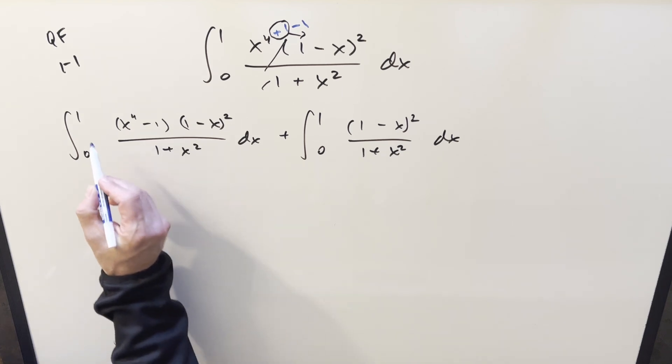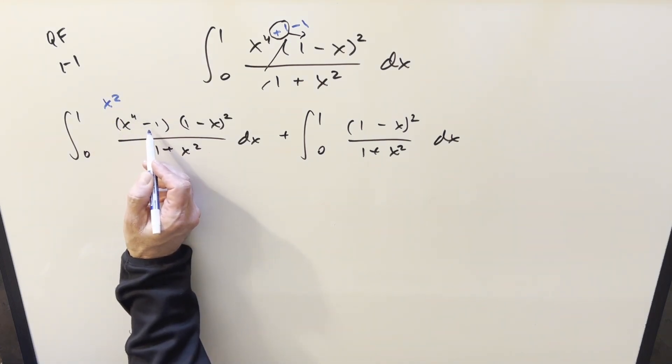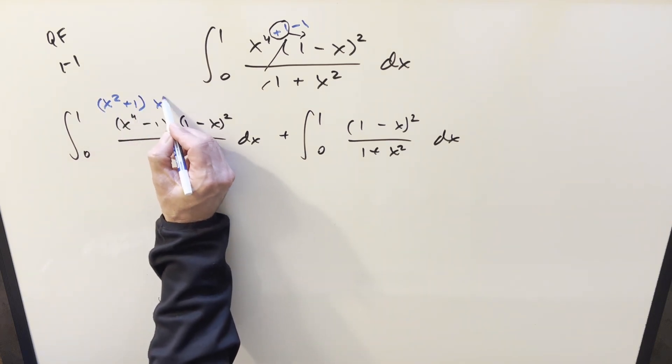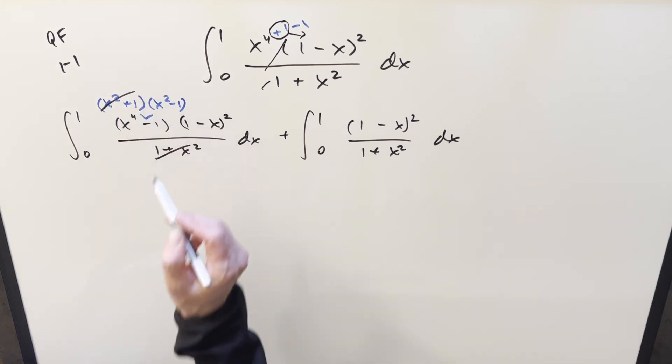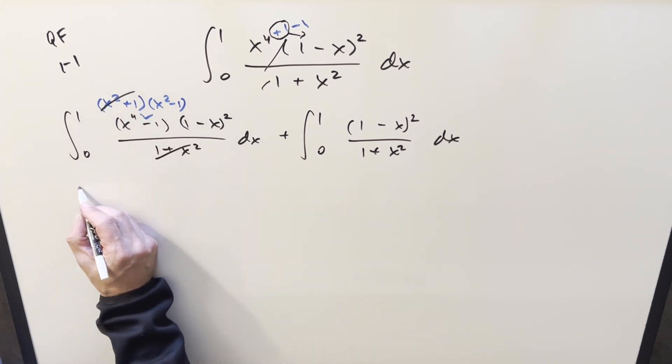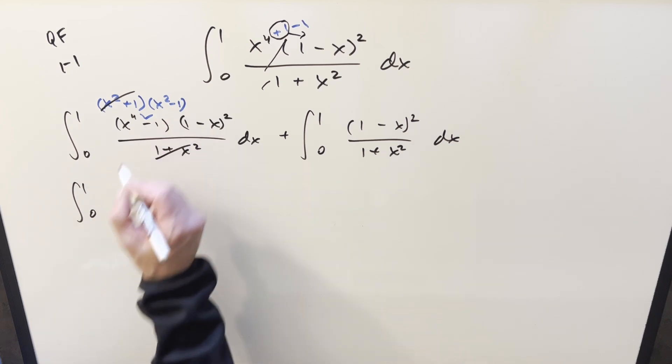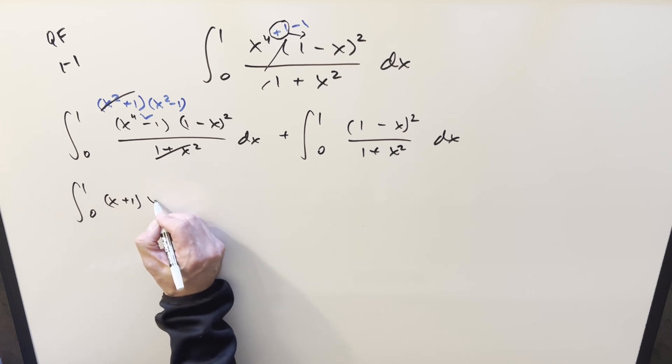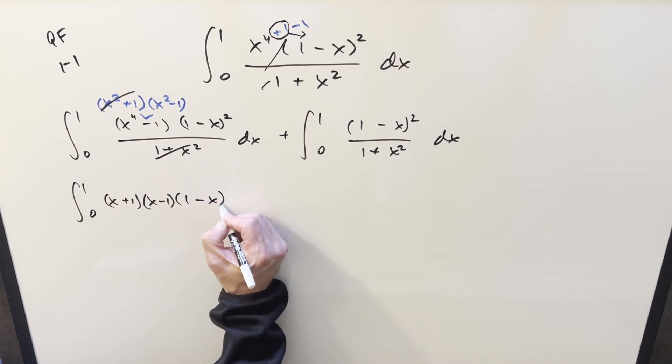And then what I'll do is just kind of work these in parallel so for x to the fourth minus one we can do this as difference of two squares I can write this as x squared plus one times x squared minus one. Then doing it that way we're going to get cancellation of this term with this term. So then cleaning this up and rewriting it we're going to have integral from zero to one x squared minus one I'm going to use difference of two squares on that as well and write it as x plus one x minus one and then we have this piece one minus x all squared.